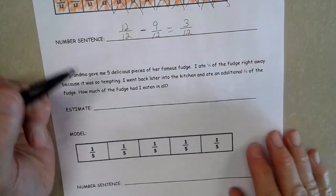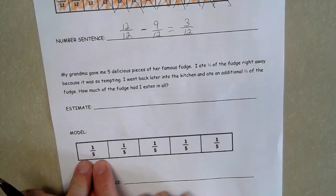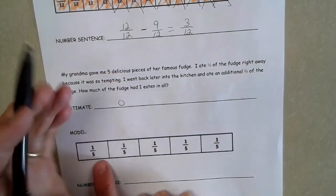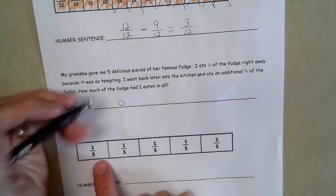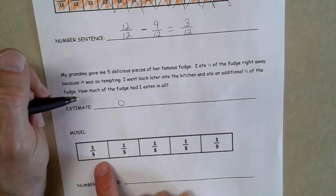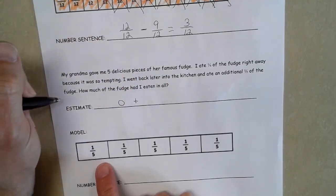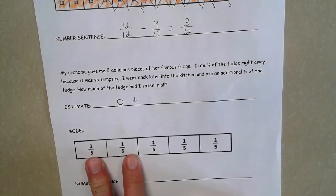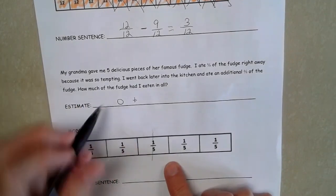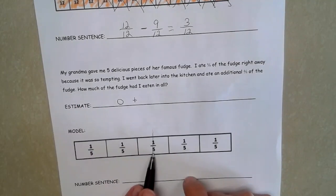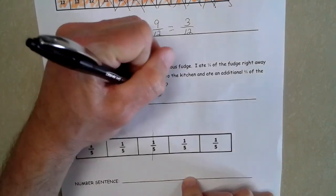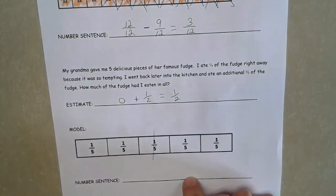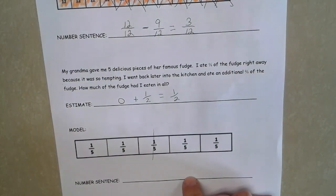So we know if I'm estimating this, one out of five, that's pretty small. That's pretty close to zero. Remember, we're estimating we look at zero, a half, or a whole. So I ate that, and then I came back and had an additional two-fifths. Well, two-fifths right here, and here's the halfway mark. Two-fifths is pretty close to half. So I'm going to add an additional half. So it looks like if I'm following this that I ate half the fudge already.